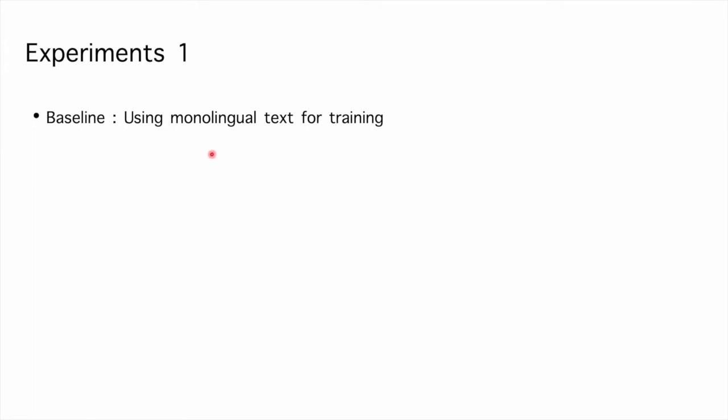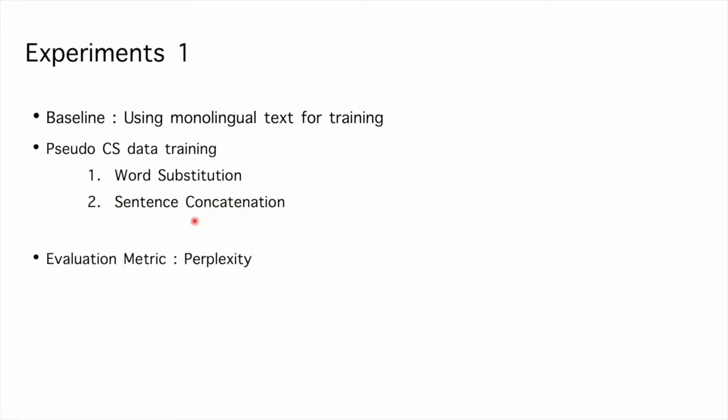Our baseline language model is trained without seeing code-switching sentences. We also utilize pseudo code-switching data for training. The evaluation metric is perplexity. Lower perplexity indicates higher confidence in the predicted target.